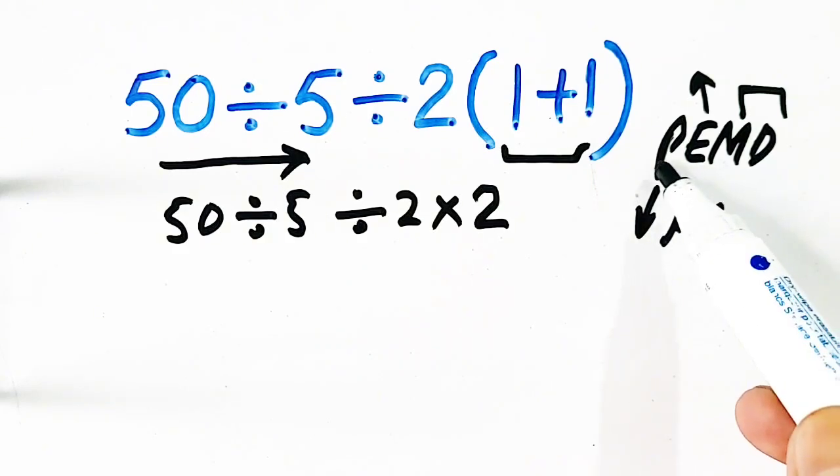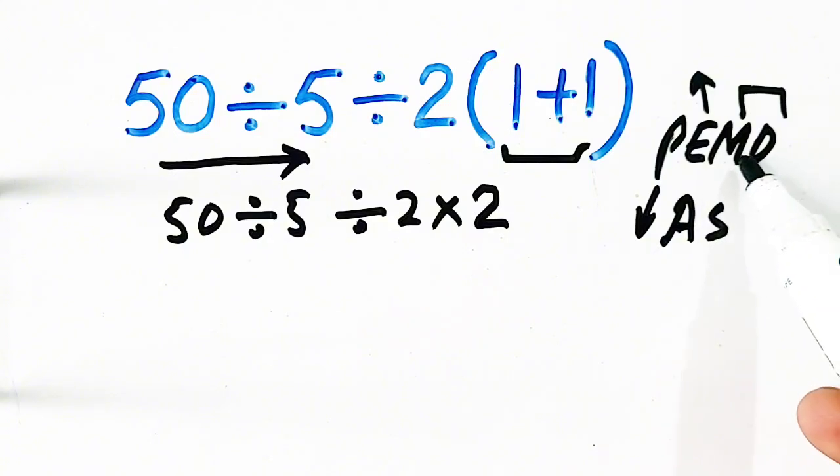Now, after parenthesis, we have to solve exponent, which is missing, then multiplication and division. Now, question is, first we have to solve division or multiplication?